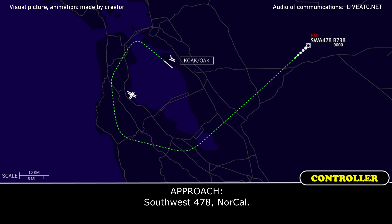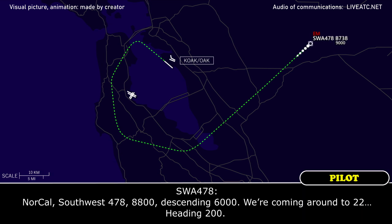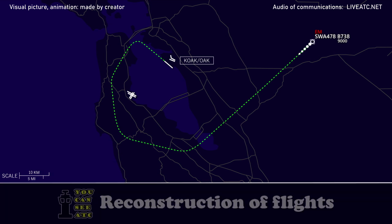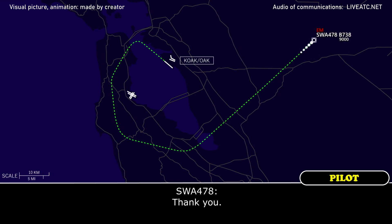Southbound 478: 125.35, copy Bravo, southbound 478. Southbound 478: North Bay approach, southbound 478. ATC: Southbound 478 at 8,800, descending 6,000, coming around to heading 200. North Bay Approach: Southbound 478, North Bay approach, roger, Oakland altimeter 3008.